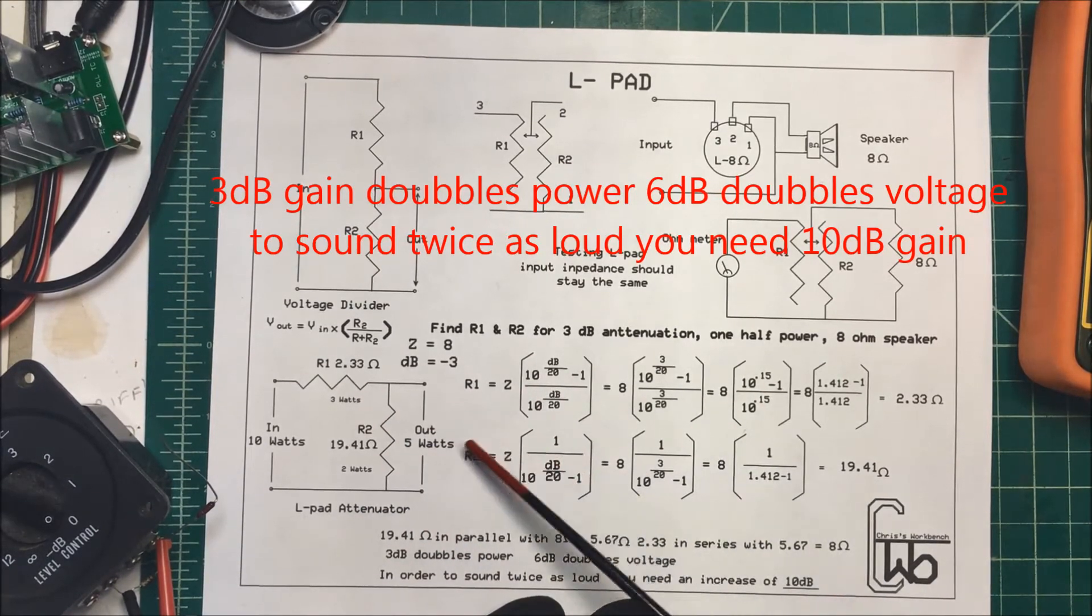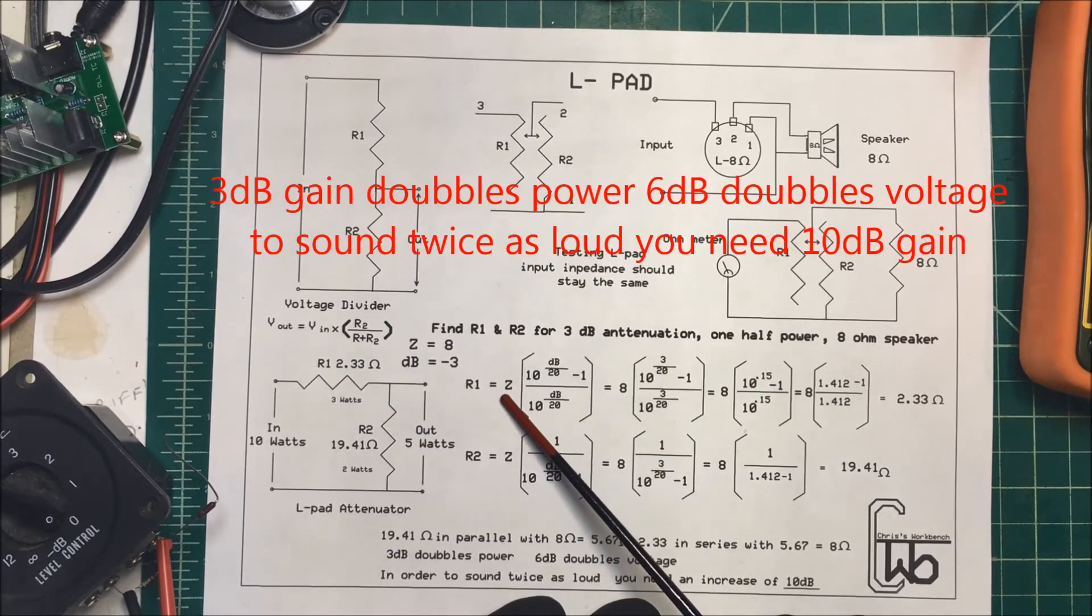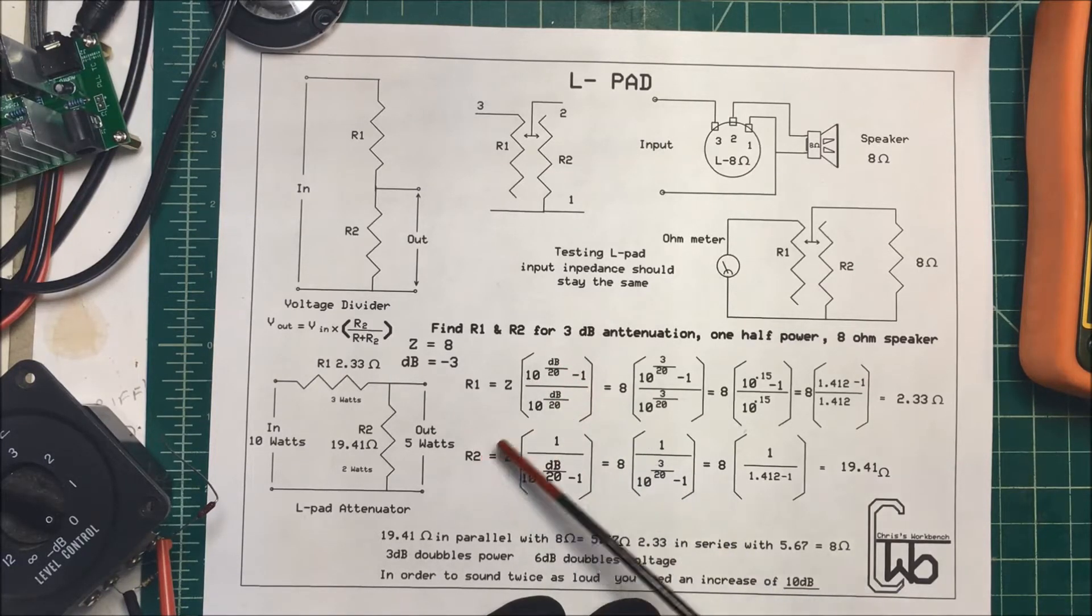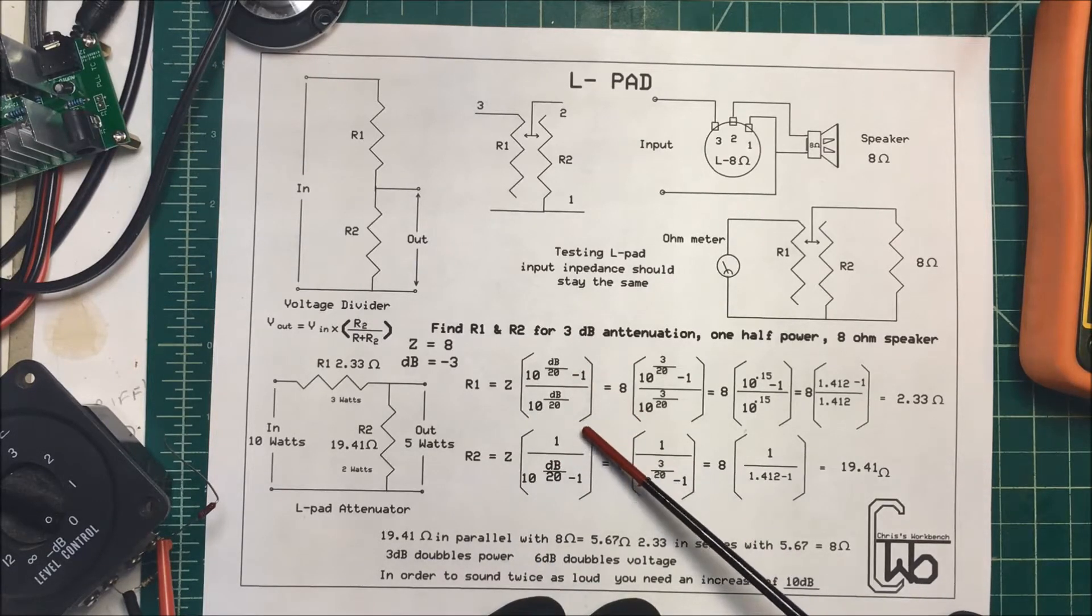Now we can use this formula here to find your resistance of R1. We take the impedance, which is our 8 ohms, and we times that by 10 to the power of dB over 20 minus 1, because we're going down in dB, and then we divide that by 10 to the power of dB over 20.